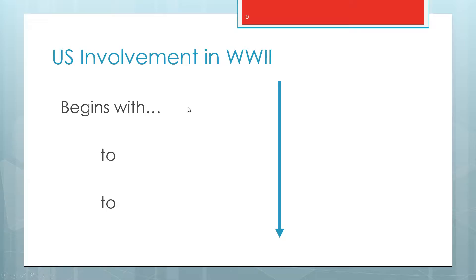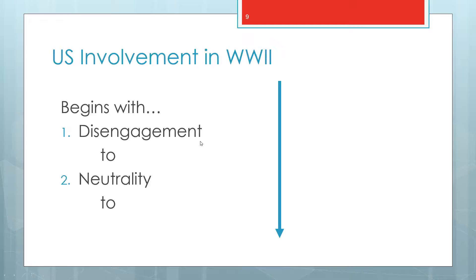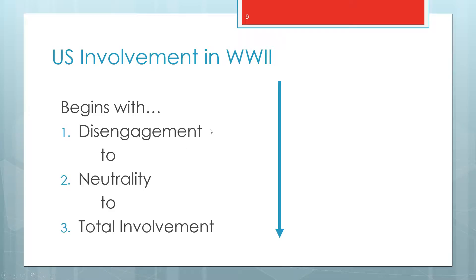Moving into the 1930s, the world moved toward World War II. For the United States, we want to trace the progression from disengagement — not even paying attention — to neutrality, saying we're not taking a side, to total involvement, with full activation of the US economy and home front to fight the war.